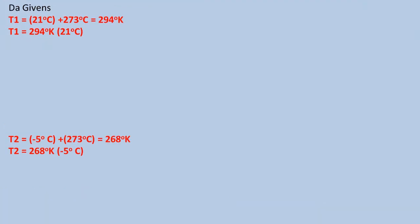Now we must get our values to the correct units by changing temperature to absolute temperature by adding 273 to get to Kelvin. We get an initial temperature of 294 degrees Kelvin and a final temperature of 268 degrees Kelvin.